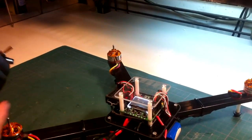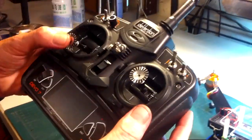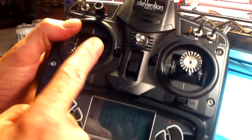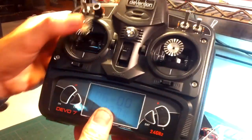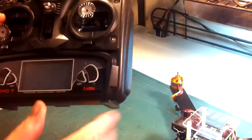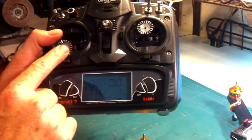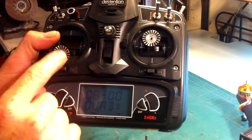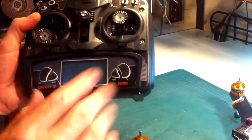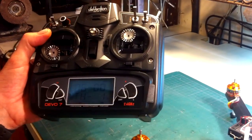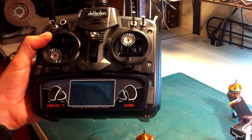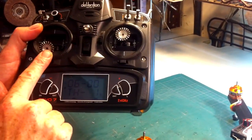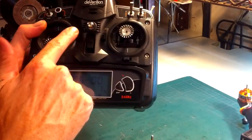To disarm it, throttle to the left and now you see it's disarmed. Okay, now if you go to arm it like this and it won't arm, it could be that your endpoint on your rudder is not high enough.